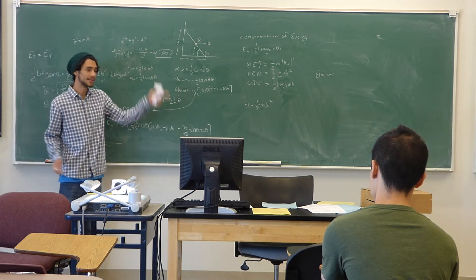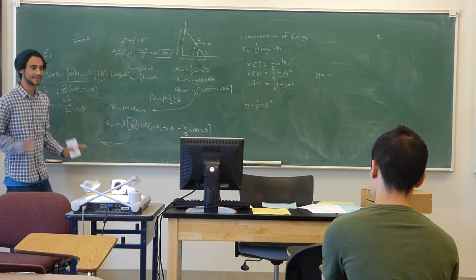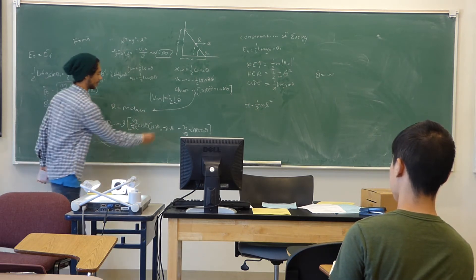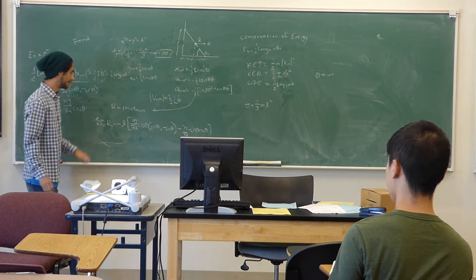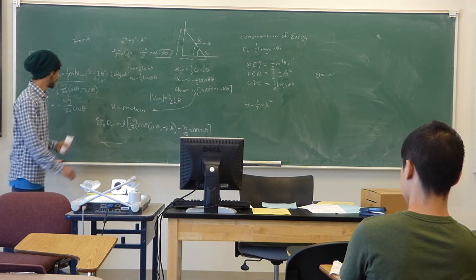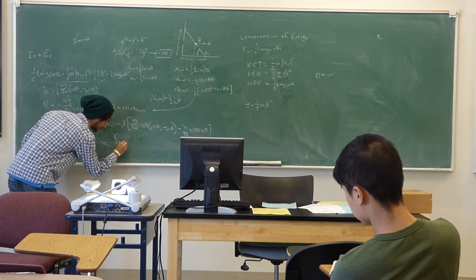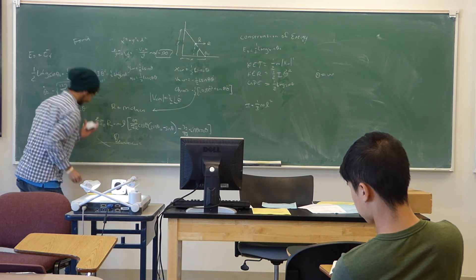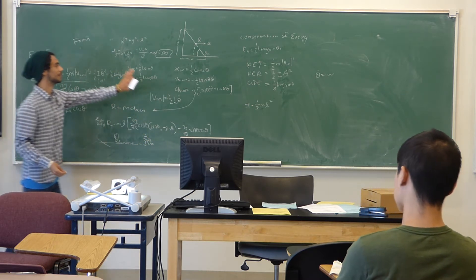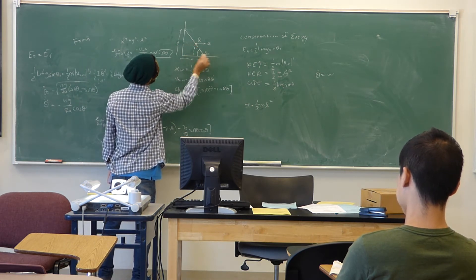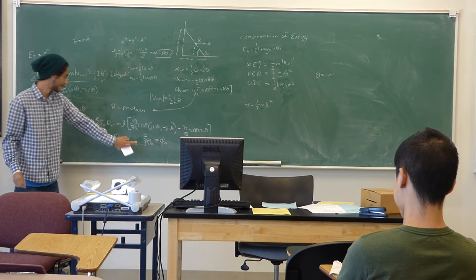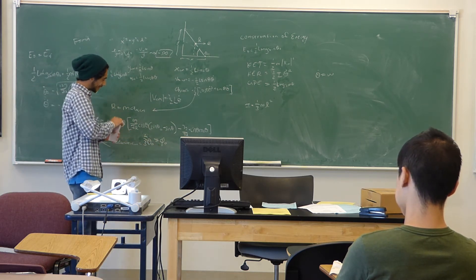If the ladder is going to disconnect from the wall, the reaction force R at that point will be zero. Setting R equal to zero, we are left with an equation purely in angles and constants. Solving for the angle of disconnection, we find it equals two-thirds of the initial angle theta naught. So the ladder disconnects from the wall at theta equals two-thirds theta naught.